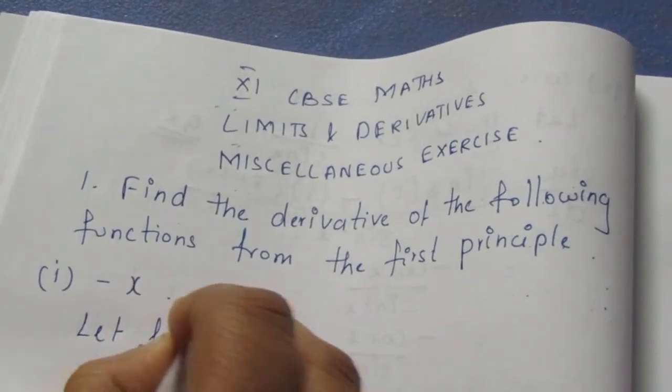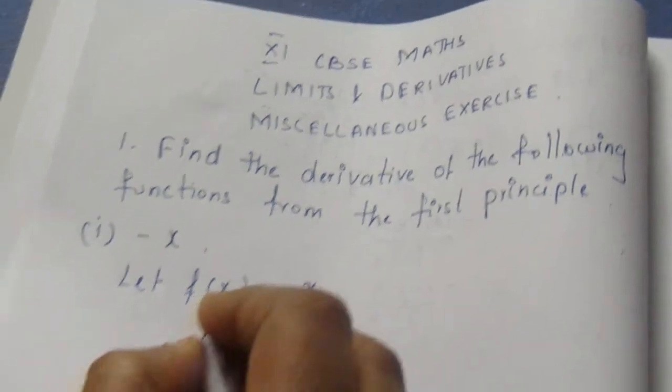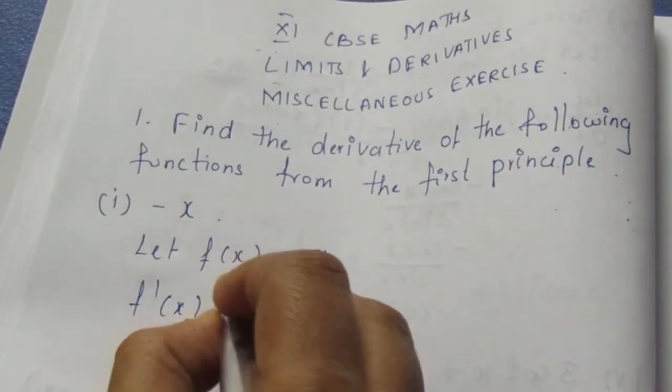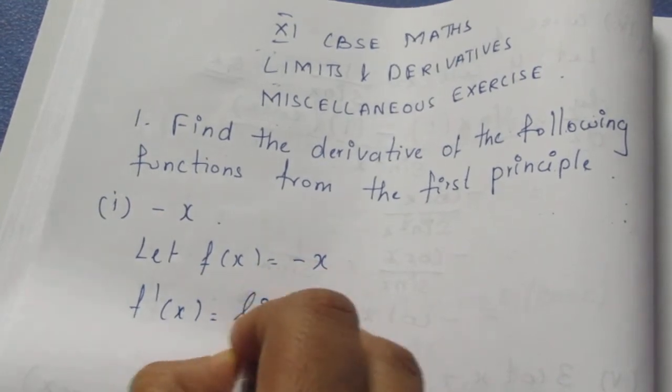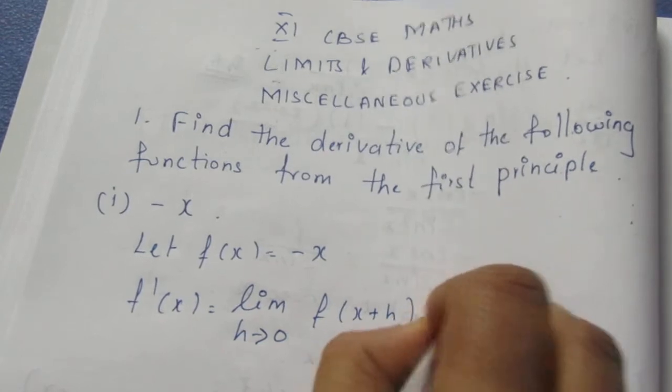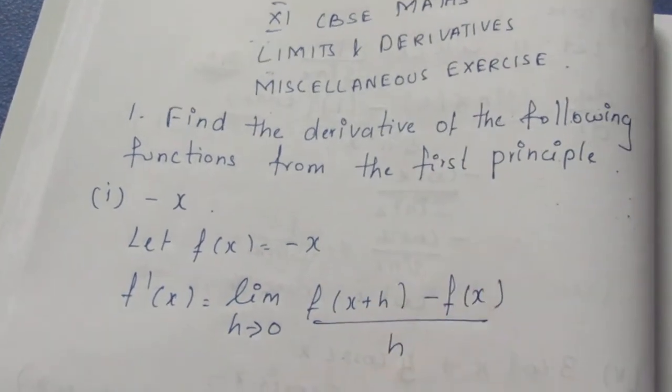Let f(x) = -x. I will write the formula for the first principle. f'(x) = lim(h→0) [f(x+h) - f(x)]/h. This is the formula.